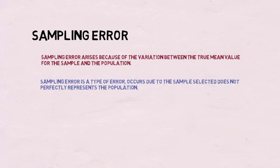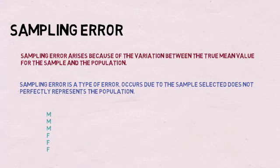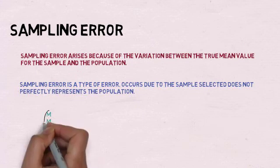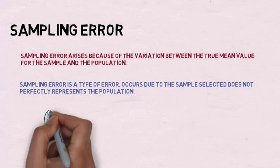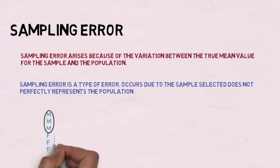a type of error that occurs due to the sample selected, which does not perfectly represent the population. Let's see an example. Like a population consists of three men and three females, and if we choose a sample of the first three